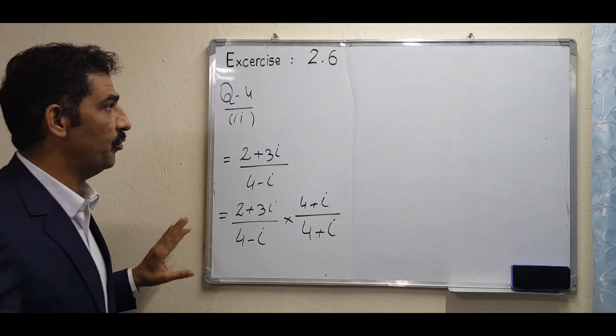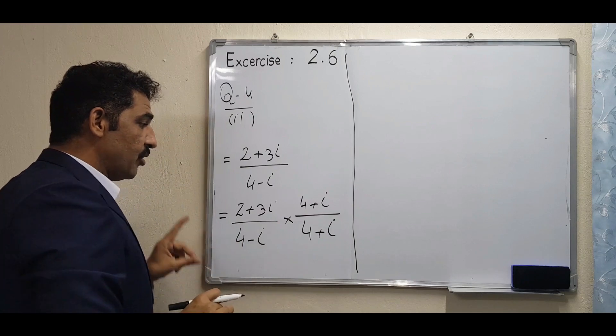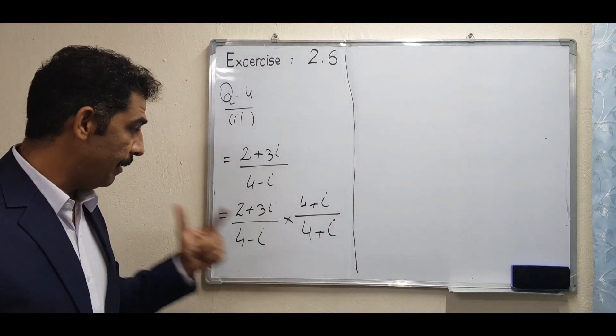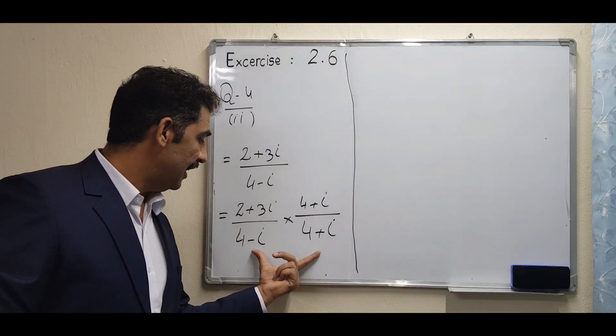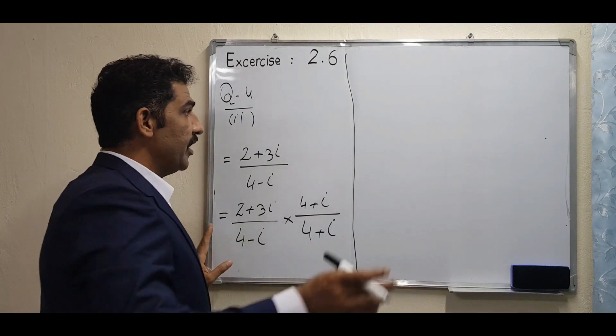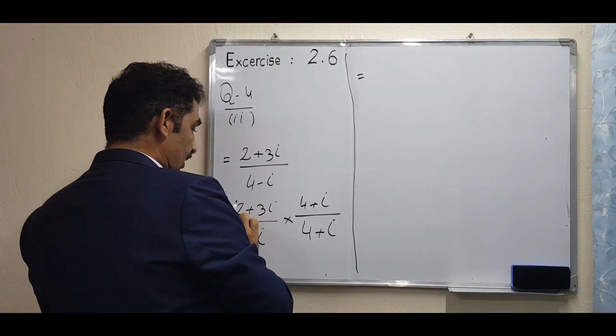Now the numerator we solve using the rule of multiplication as we solved before. But the denominator, we use a formula, so it's easy. For the numerator part, how to solve? First, this 2 multiplies with both numbers.